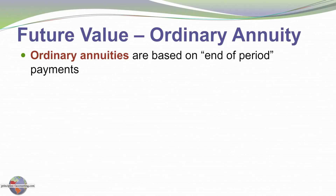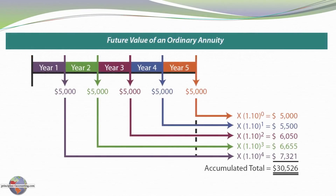An ordinary annuity is just the opposite — the payments are at the end of each period. Moving the $5,000 payments from the beginning to the end of each year and repeating the sequence of calculations, the first payment is only invested for four years, the next one for three years, and so it would go. The last payment of $5,000 is only worth $5,000 since it occurs on the very last day and has no opportunity to grow with interest.